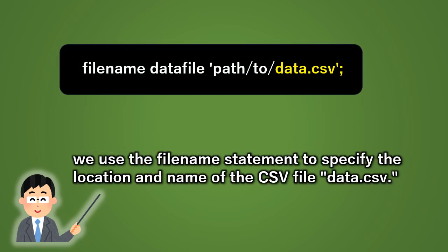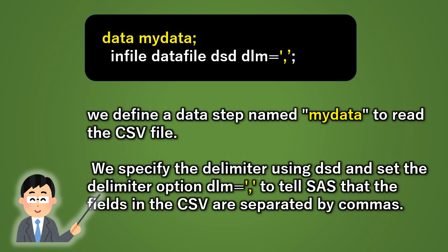We use the filename statement to specify the location and name of the CSV file, data.csv. We define a data step named mydata to read the CSV file. We specify the delimiter using DSD and set the delimiter option dlm equals, to tell SAS that the fields in the CSV are separated by commas.